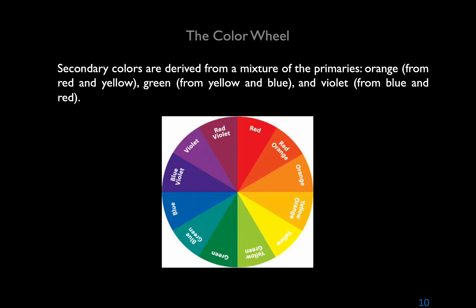Tertiary colors are implied on the basic color wheel — the spectrum can be divided into narrower and narrower bands of radiation. The six colors of the color wheel may be extended to 12 by in-between mixtures: yellow-green, yellow-blue-green, blue-violet, red-violet, red-orange, and yellow-orange.